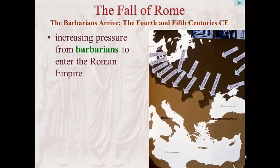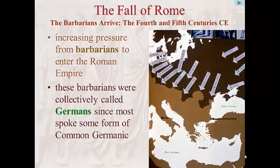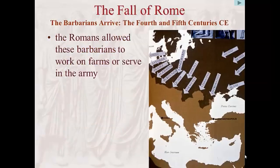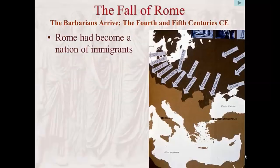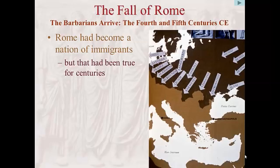The Barbarians Arrive: the 4th and 5th centuries CE. Increasing pressure from peoples outside the Empire — the much-maligned barbarians — had compelled the Romans in later antiquity to let more and more foreigners inside their state. Since most of these spoke a language based on common Germanic, the Romans referred to them collectively as Germans, even though they actually represented a wide array of nations and cultures. These newly adopted resident aliens were assigned to work farms or conscripted into the Roman army in numbers so large that the late Latin word for soldier came to be barbarous — barbarian. Rome was fast turning into a nation of immigrants, and by late antiquity it was undeniable that, in spite of being called Roman, the Empire was in fact a multicultural enterprise.